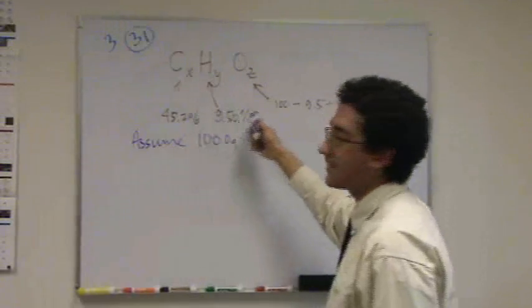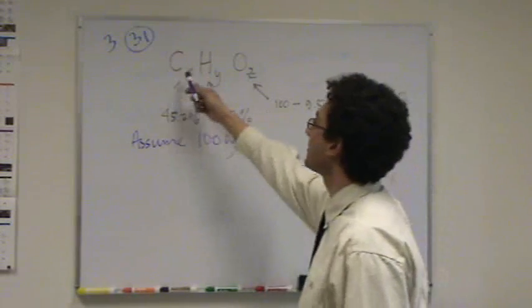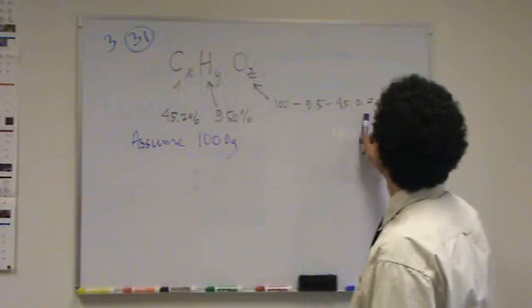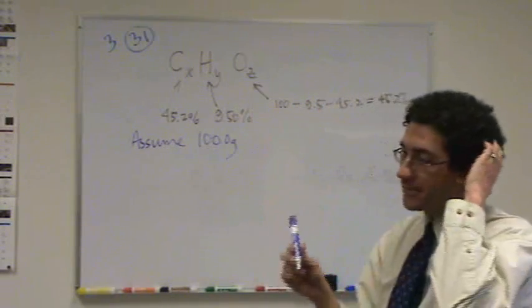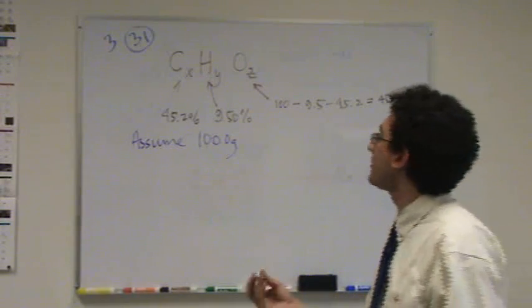Thus, everything here changes to grams. I have 45.2 grams of carbon, 9.5 grams of hydrogen, 45.2 grams of oxygen. And now we're on easy street, because we're going to convert grams to moles for each one.